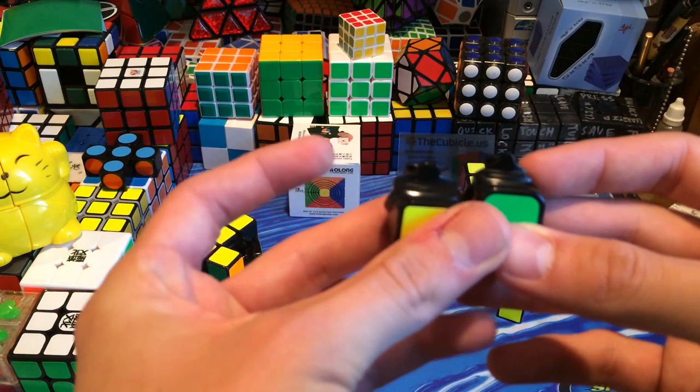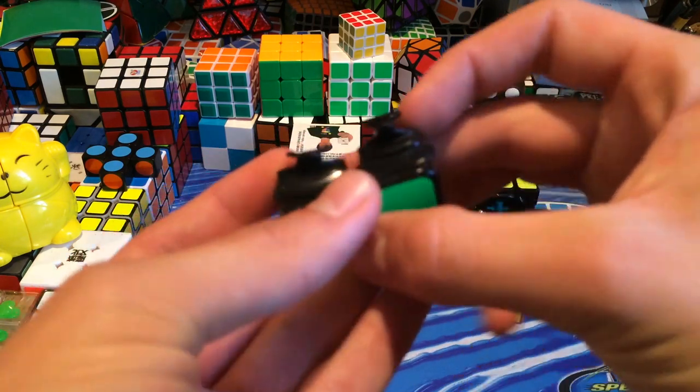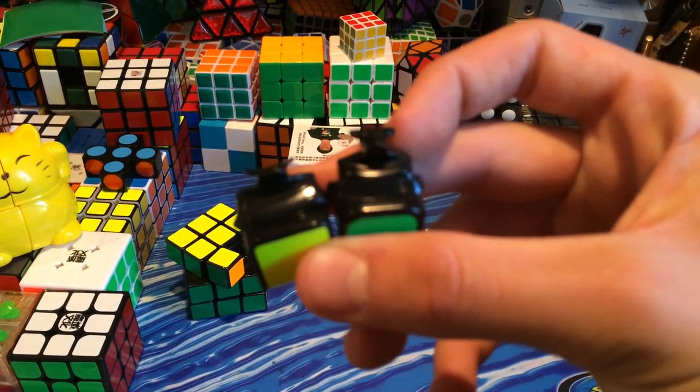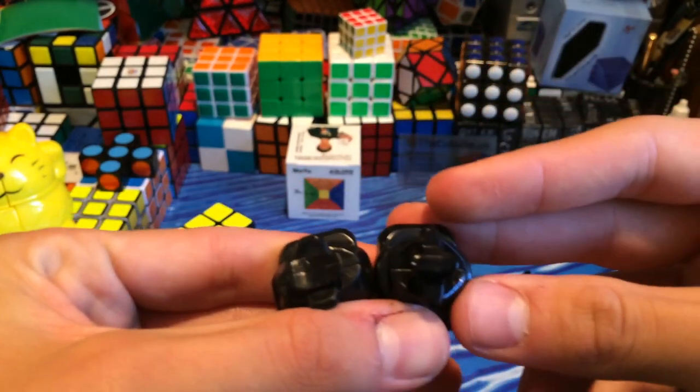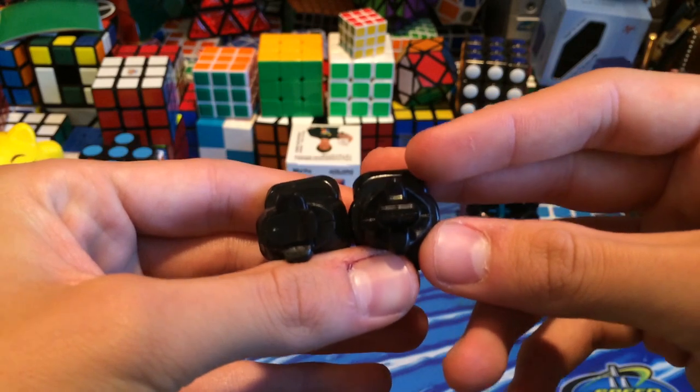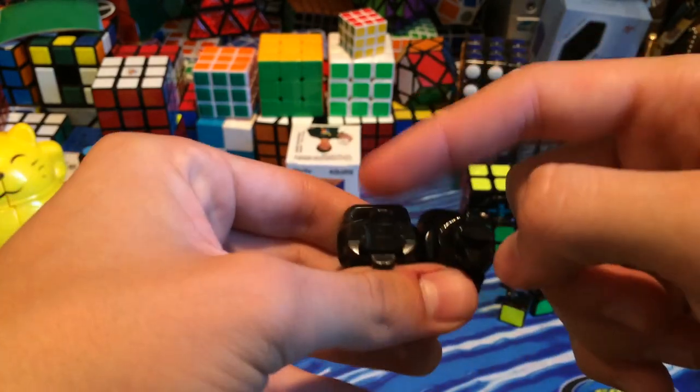So here I have the edge of the Moyu Weilong on the left. And on the right is the Aolong. And let's get this to focus in. So you can see that the torpedo is a lot smaller on the Aolong than it is on the Weilong.